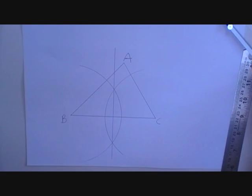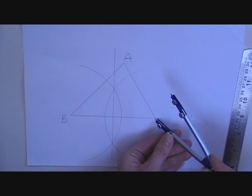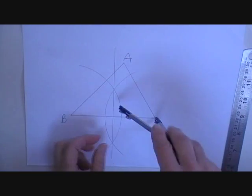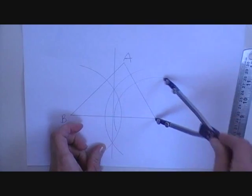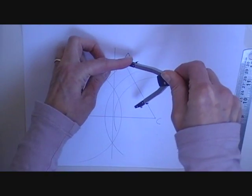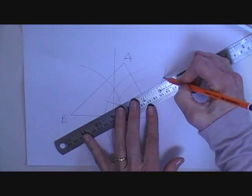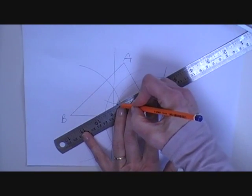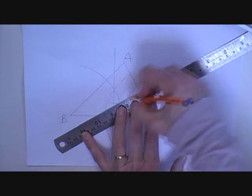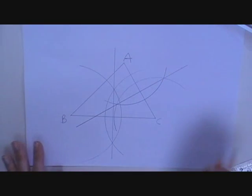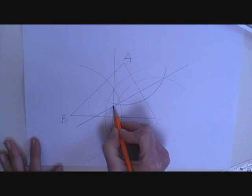I am going to do the same for AC. Where they both intersect, that is the circumcentre.